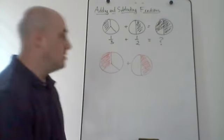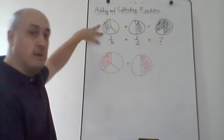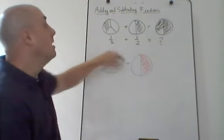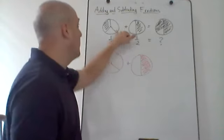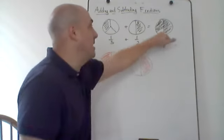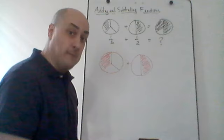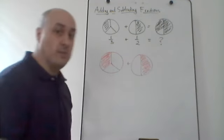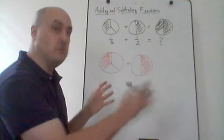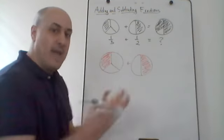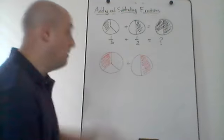Now I want to add two fractions where the denominators don't match up. I have one-third, represented by a circle cut into three pieces with one shaded, plus one-half — a circle cut into two pieces with one shaded. I can combine them visually, but what fraction of the total circle is that? It's not like before where one-third plus one-third is two-thirds, because now I'm not adding the same quantities. I'm adding a third and a half — two different portions — so I can't just add them together simply.